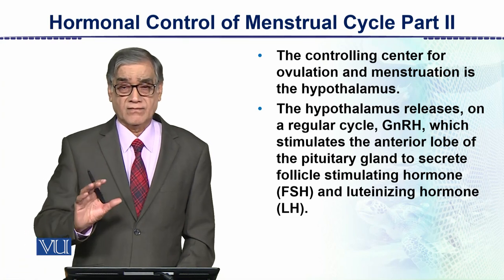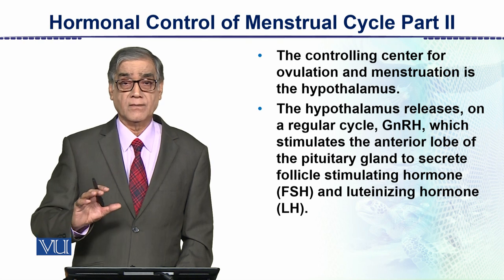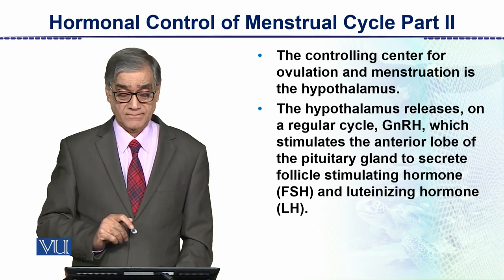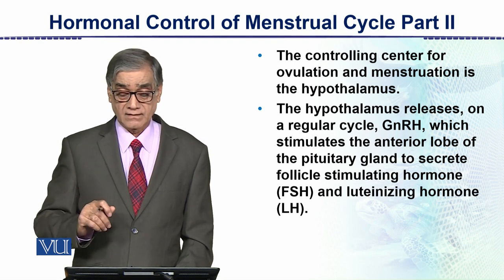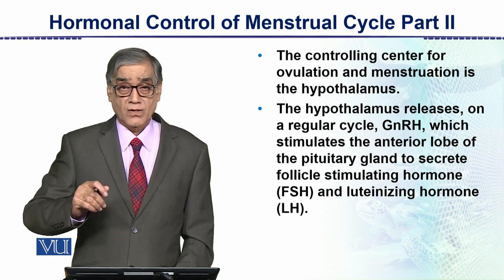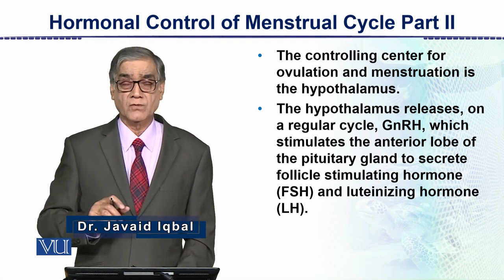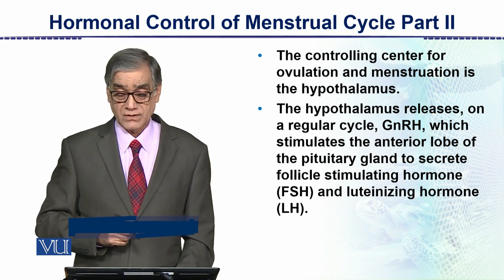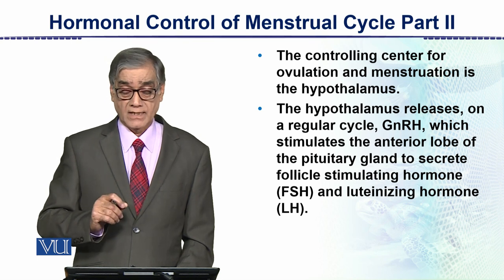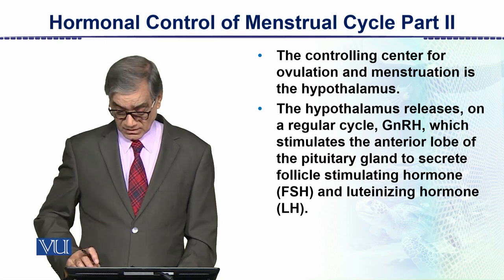The controlling center for ovulation and menstruation is in fact the brain. The brain's part is the hypothalamus. The hypothalamus releases on a regular cycle this hormone which is gonadotropin-releasing hormone, GnRH — which includes FSH and LH — and it stimulates the anterior lobe of the pituitary gland to secrete follicle stimulating hormone and luteinizing hormone.